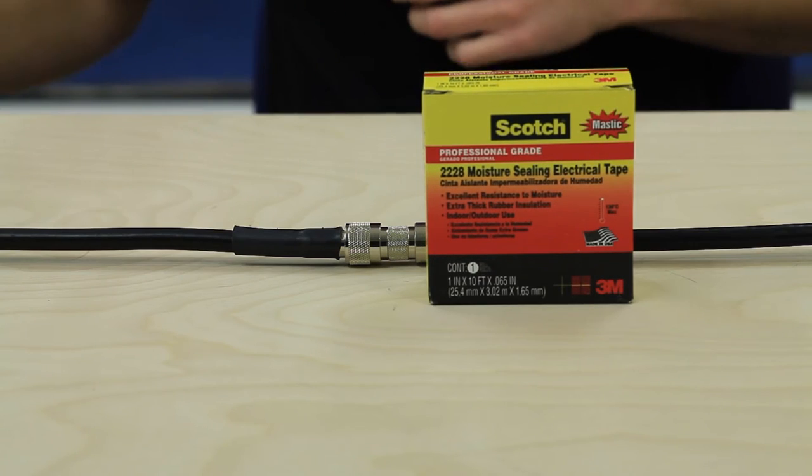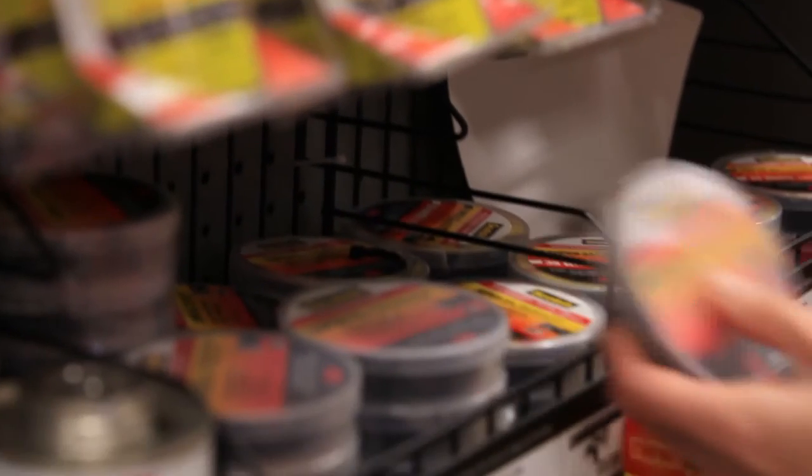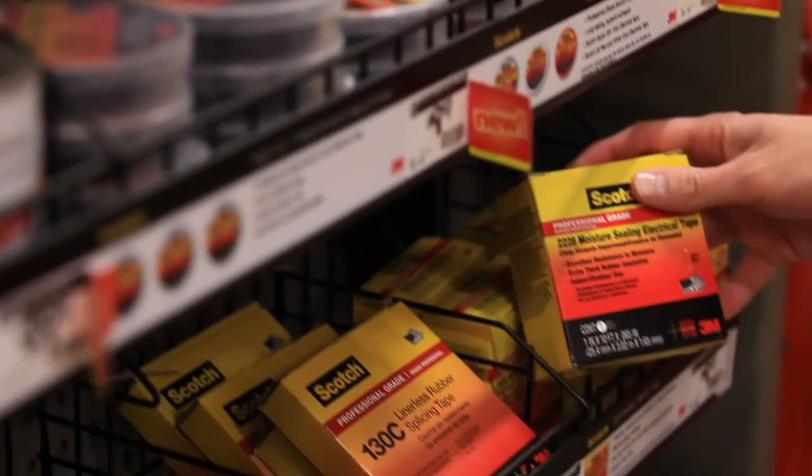Weatherproofing the cable connections is easy to do and it's inexpensive. You'll just need a roll of moisture sealing tape and a roll of electrical tape. You can find these at most hardware stores. We've got links in the description as well.